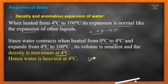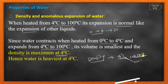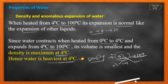Since water contracts when heated from zero to four degrees, its volume is smaller and the density is maximum at four degrees Celsius. Water's density is highest at four degrees Celsius. When we go from four degrees down to zero degrees, expansion happens instead of contraction — so at four degrees the density is maximum. Hence water is heaviest at four degrees Celsius.